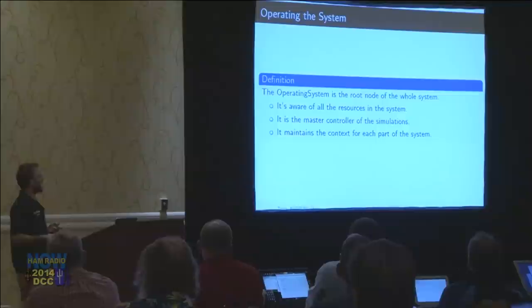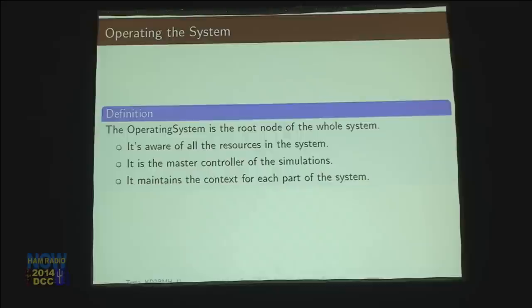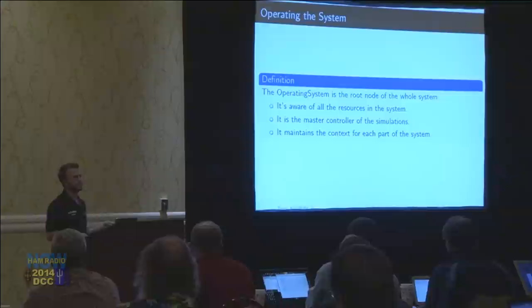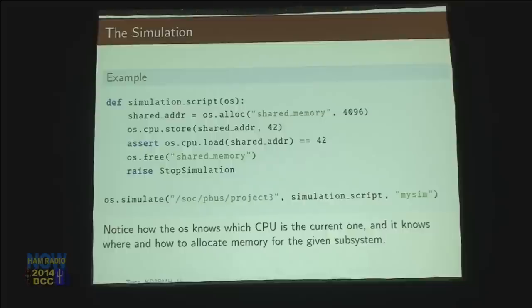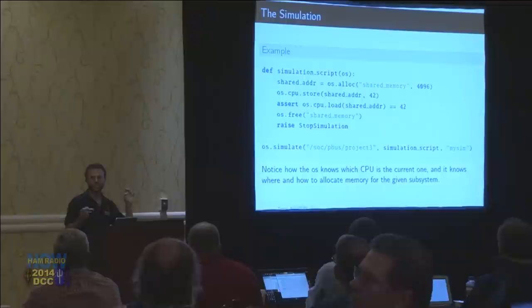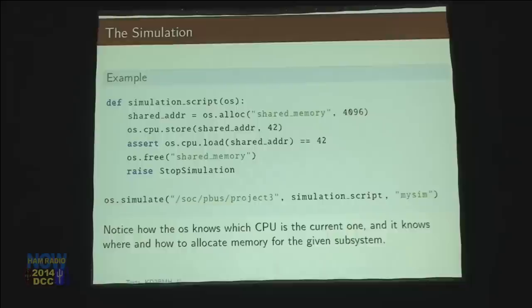There's one other thing that's been there the whole time — a kind of faux operating system inside the simulation to make the code cleaner. Just like a real operating system, it's aware of all the resources in the system — the CPUs, the memories. So I can say, give me a piece of shared memory that's one page in size, 4096 bytes, and it knows which memory is at which location. I wrote it this way because it matches how you end up writing the actual C code.